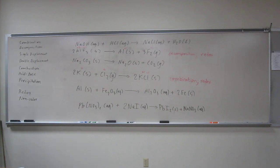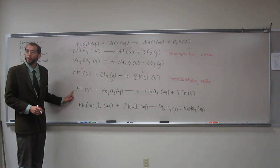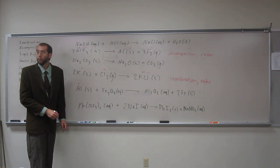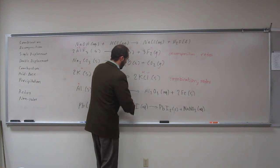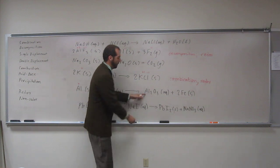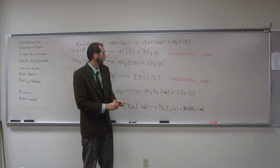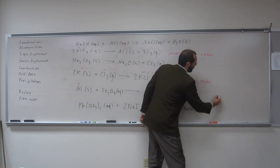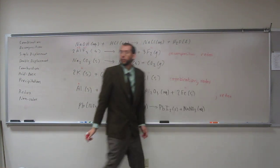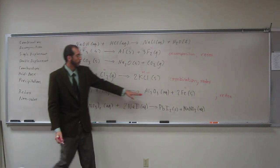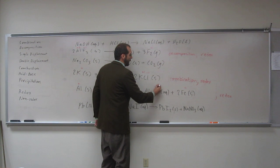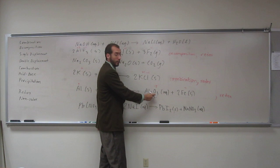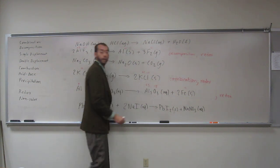Let's keep going with that oxidation number changing and uncombined/combined element theme. In this next reaction, we have aluminum which is uncombined — so zero for aluminum. Over here aluminum is in the form of aluminum oxide, so it's combined. It went from zero to something else, and iron here is zero. So already we know this is a redox reaction because aluminum went from zero to something else. Oxygen is always minus two, so three oxygens is minus six, meaning aluminum here is plus three.